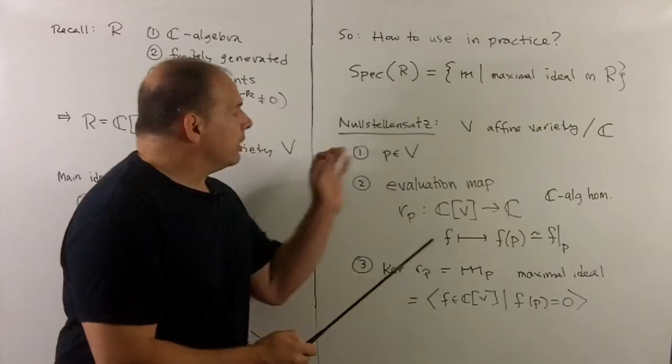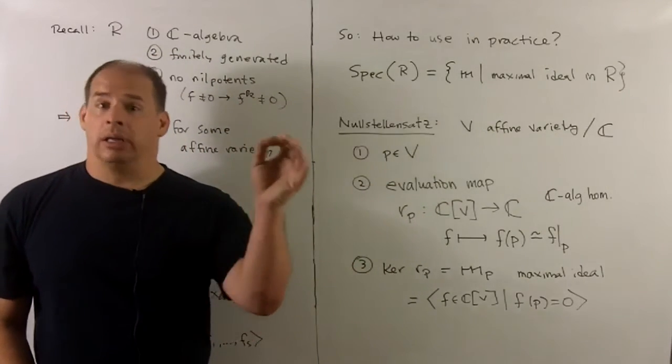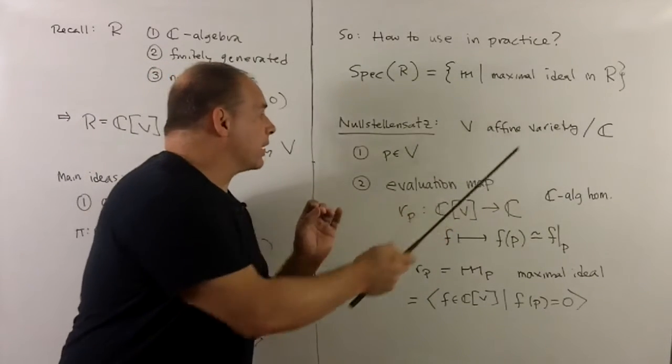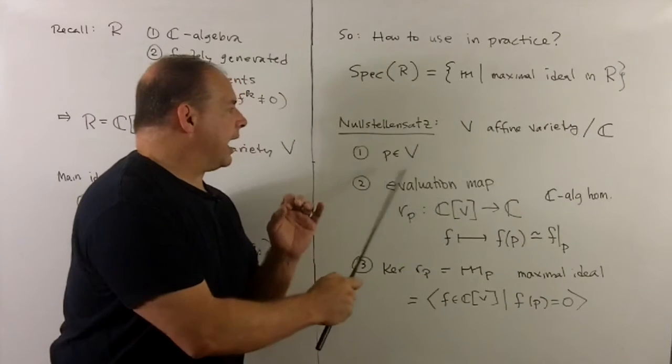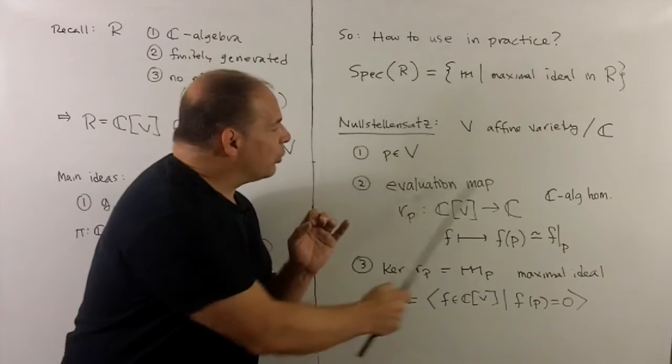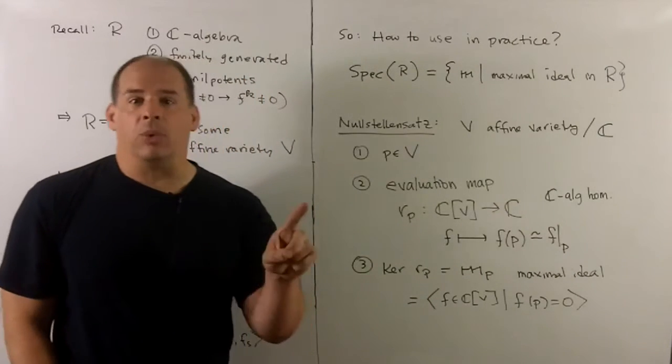Now, from the Nullstellensatz, to get a handle on these maximal ideals as points, here's the process. If we have V, an affine variety over the complex numbers, I could pick any point in V. Associated to P is going to be an evaluation map, which is just going to take elements of the coordinate ring and evaluate at the point.